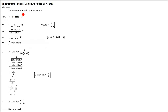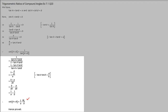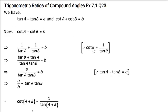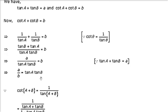Now, tan(a) + tan(b) = a and cot(a) + cot(b) = b. We have to prove that cot(a + b) = 1/a − 1/b. Start with cot(a) + cot(b), written as 1/tan(a) + 1/tan(b). Cross multiply: you get (tan(b) + tan(a))/(tan(a)·tan(b)). Since tan(a) + tan(b) = a, put a in the numerator. Bring b to denominator, so tan(a)·tan(b) = a/b.